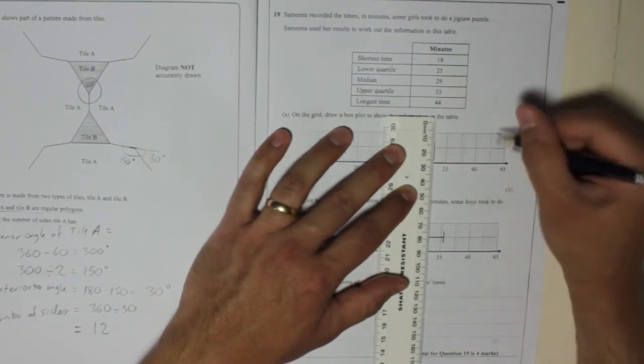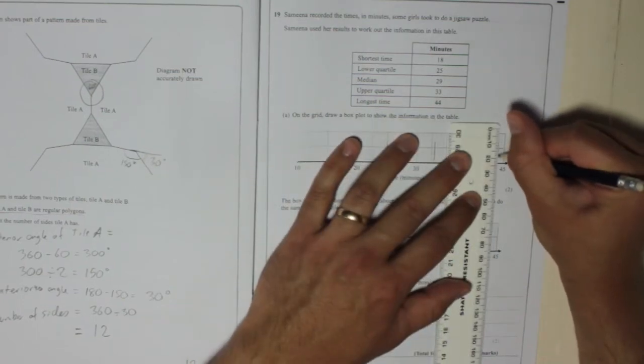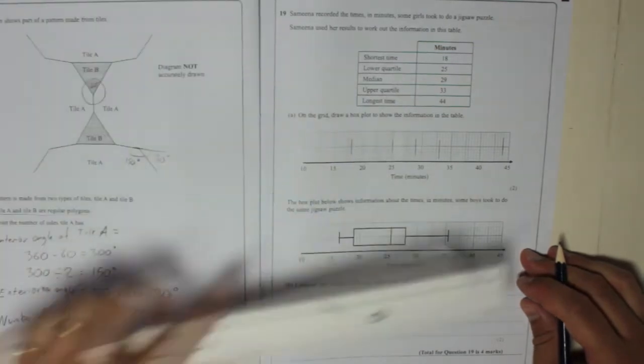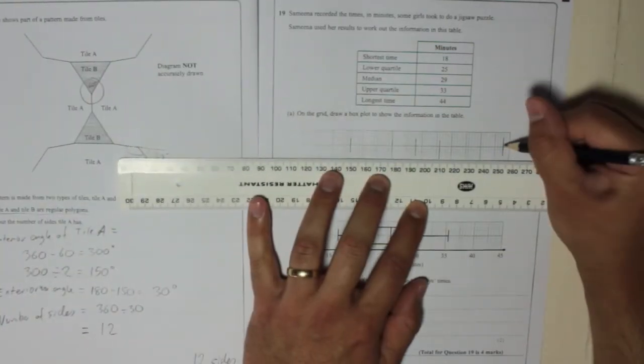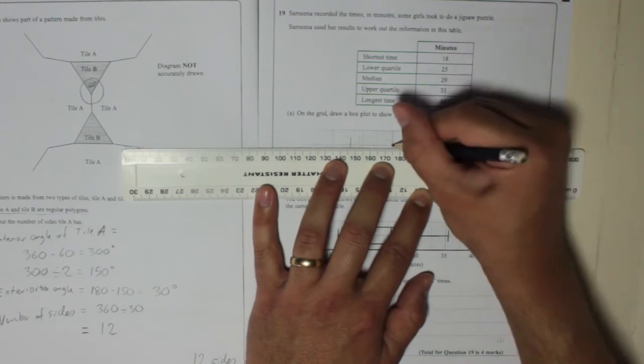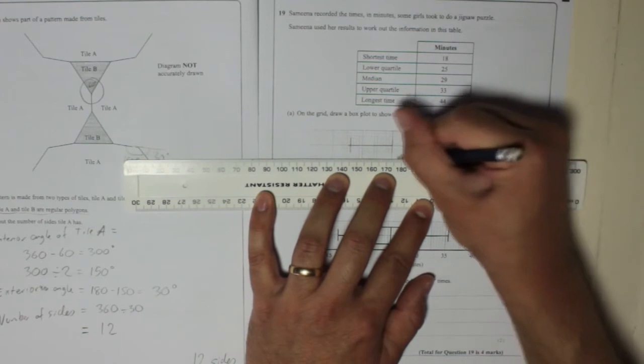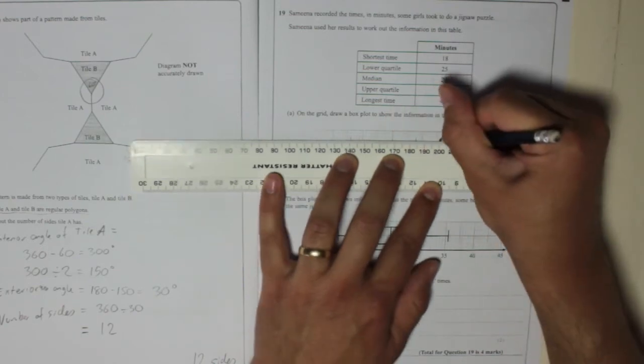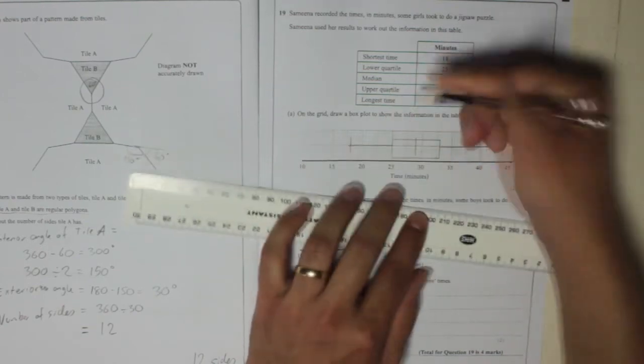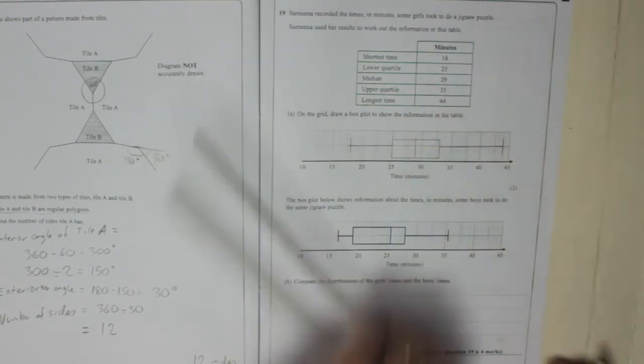And then the longest time, 44, that's 2 squares back from 45. There we go, so I've got my fingers in, it's not going to be totally straight, but that's okay. A stick going to the middle, another stick going to the end, and then this needs to be joined together to make a box. Like that. Join those up. There we go, so that's my dodgy looking box plot.